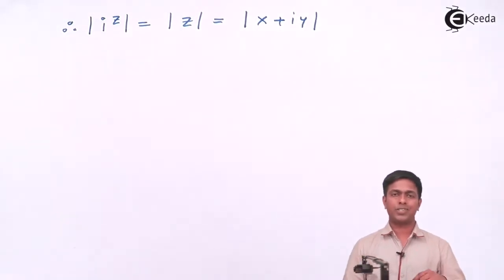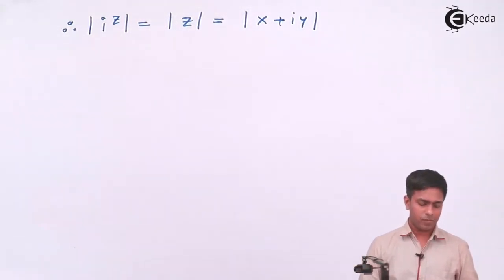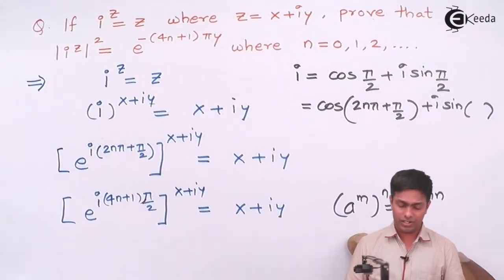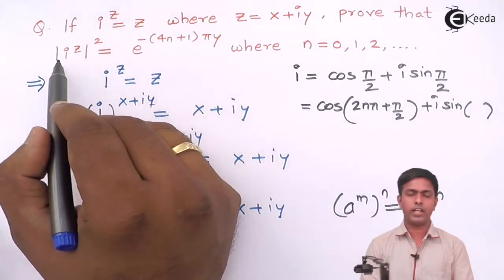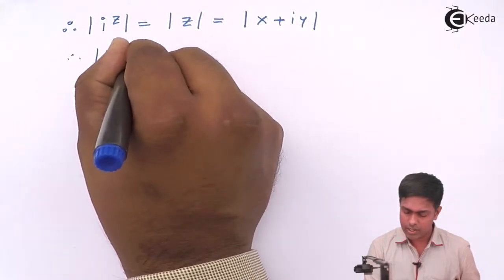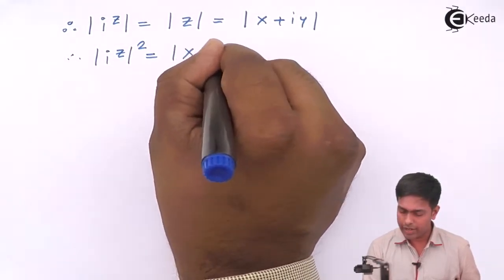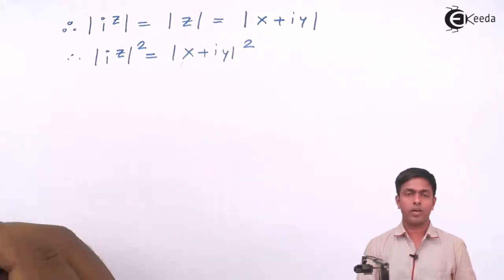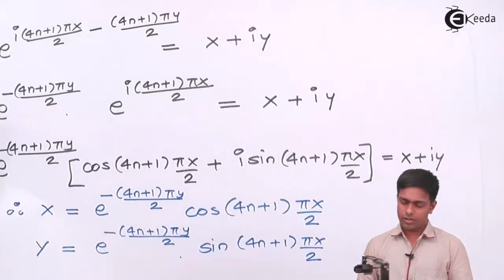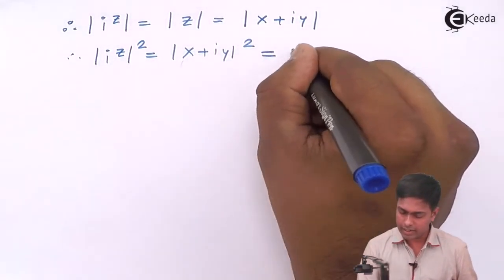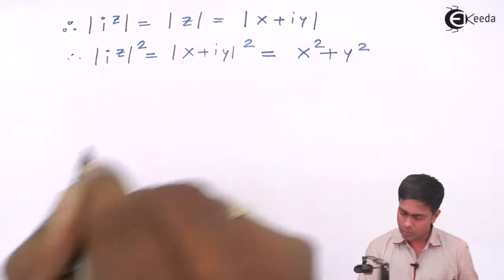Since the question asks for the square of that modulus, we square both sides. Therefore |i^z|² equals |x + iy|², and the square root and square cancel, giving us simply x² plus y².